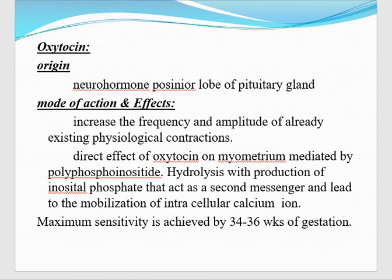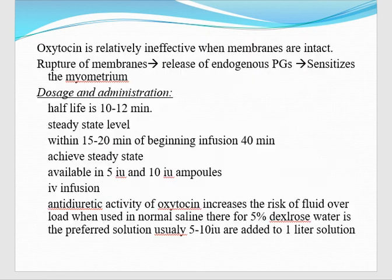The maximum sensitivity to oxytocin is achieved by 34 to 36 weeks of gestation. Oxytocin is relatively ineffective when membranes are intact. When we rupture the membranes, there is release of endogenous prostaglandins that will sensitize the myometrium, so more contractions will occur.